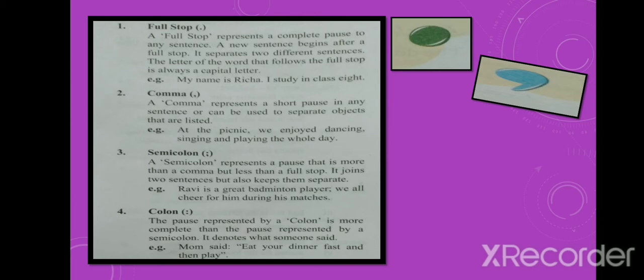Third, semicolon. A semicolon represents a pause that is more than a comma but less than a full stop. It joins two sentences but also keeps them separate. For example: Ravi is a great badminton player; we all cheer for him during his matches.